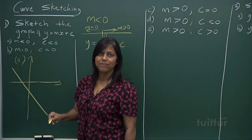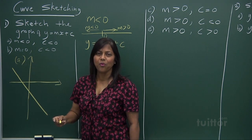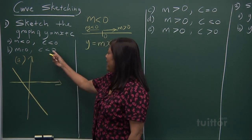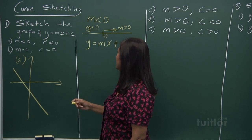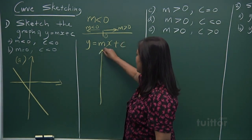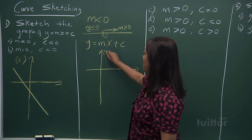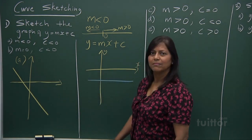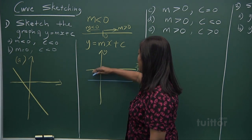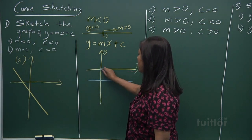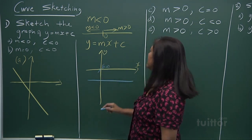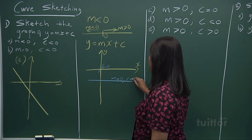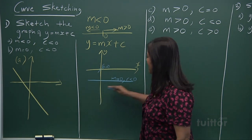In the case of b, when m equals 0, the gradient is 0 — it means there is no slope. And c is less than 0. How does the graph look? Well, if c is less than 0, with no slope, the line can be anywhere as long as it is below the origin (0, 0). So when m equals 0 and c is less than 0, it is any line parallel to the x-axis but below the origin.